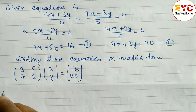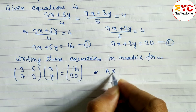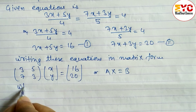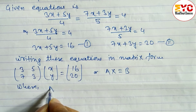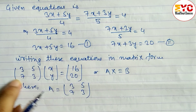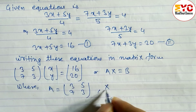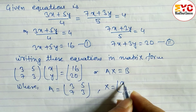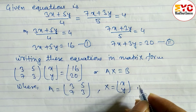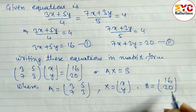This is in the form AX = B, where A = [3, 5; 7, 3], X = [x; y], and B = [16; 20].